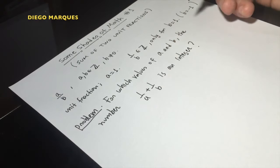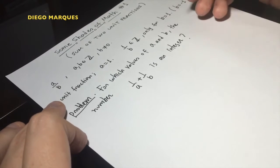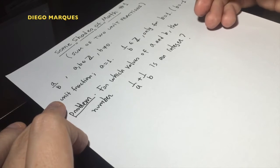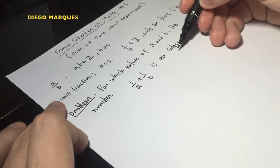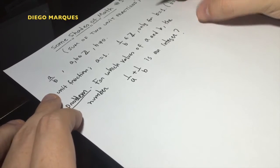So we want to know for which values of the denominators the sum of two unit fractions is an integer. There are many ways of solving this kind of problem. I will choose one using nice tricks. I think this is a very clever idea and it's very easy, so it could be applied